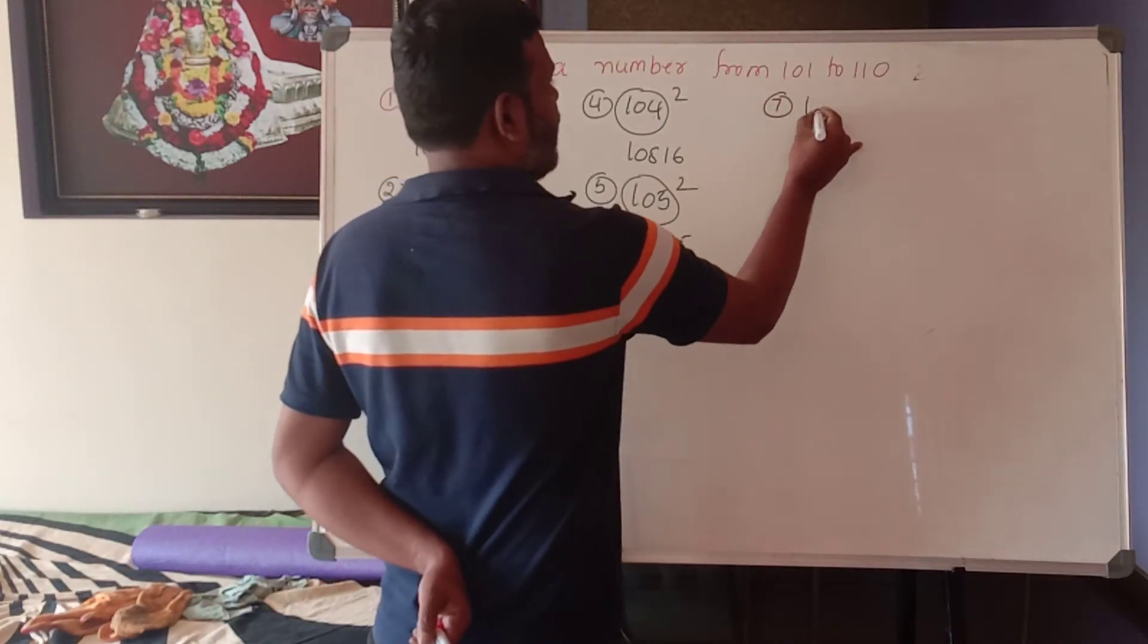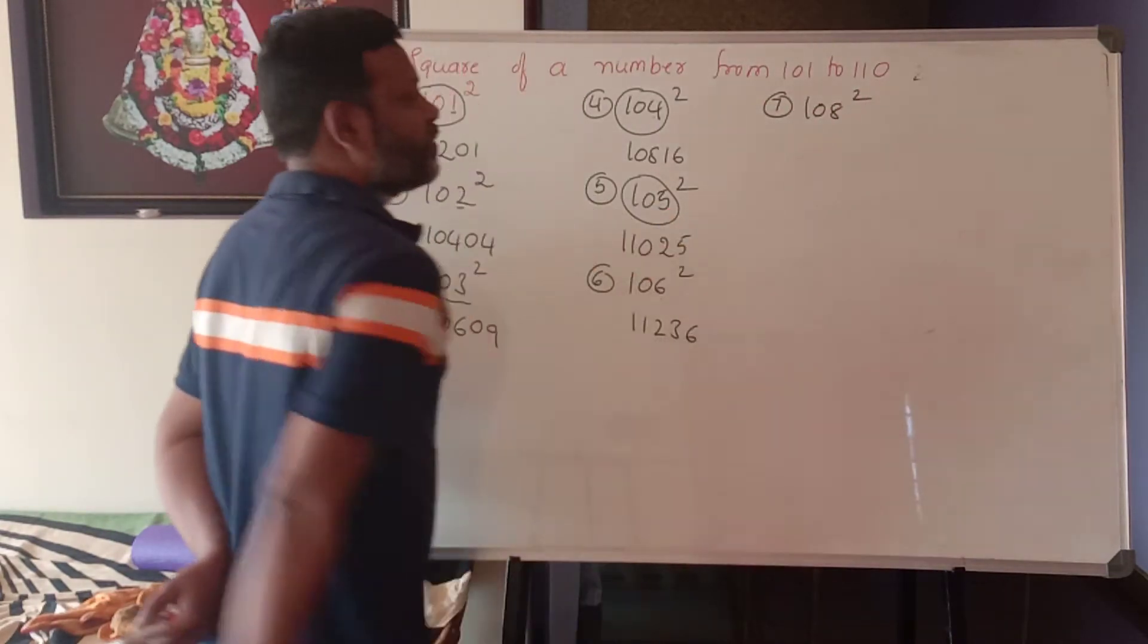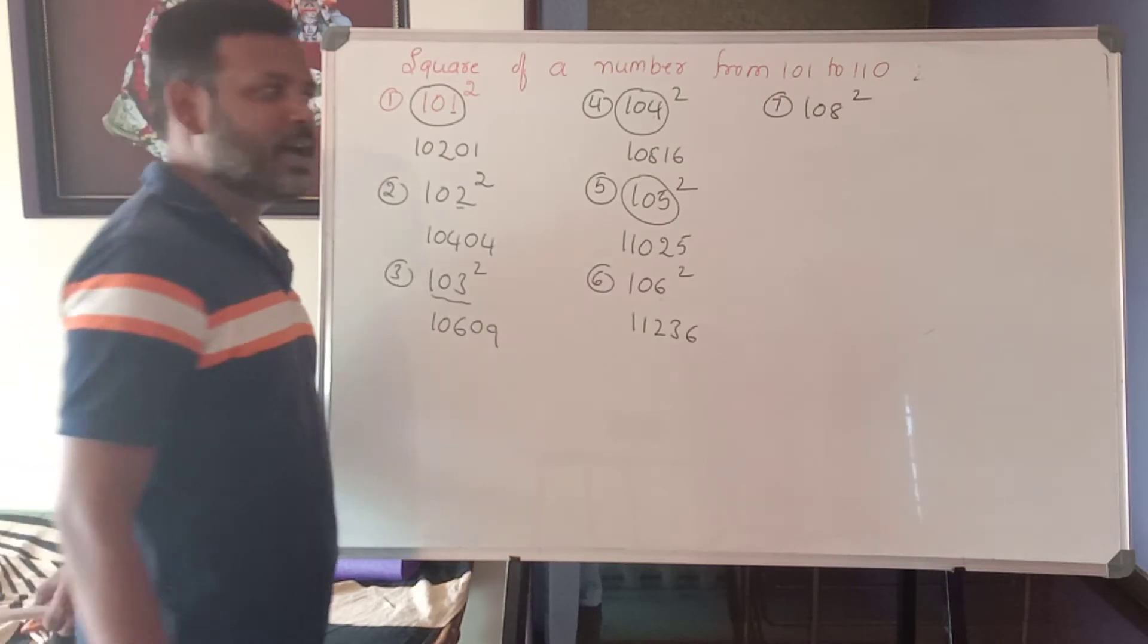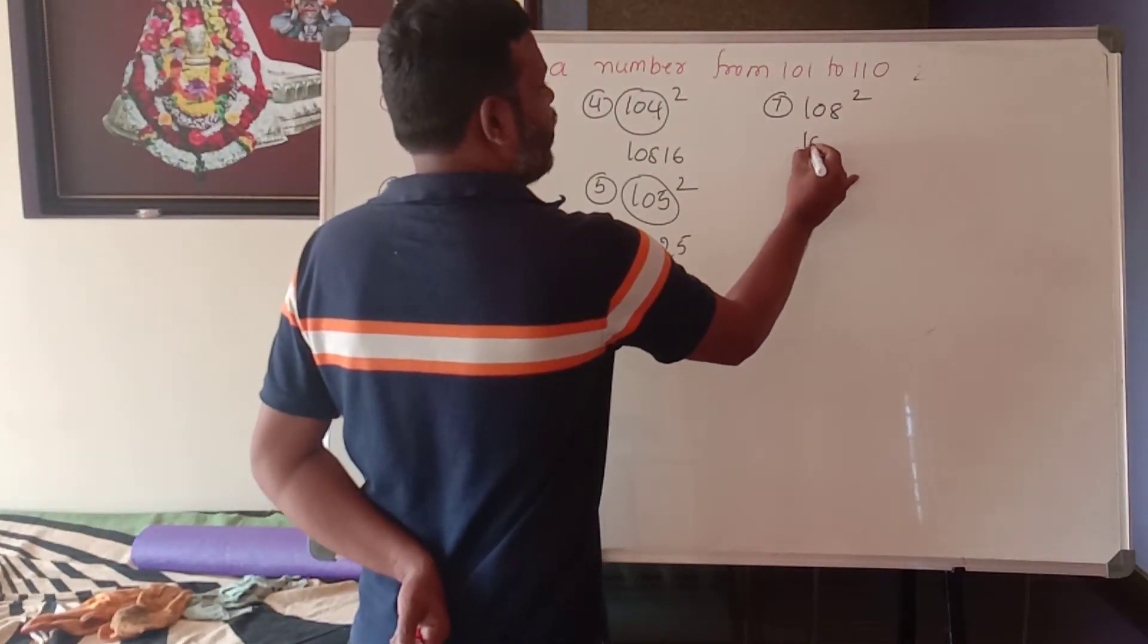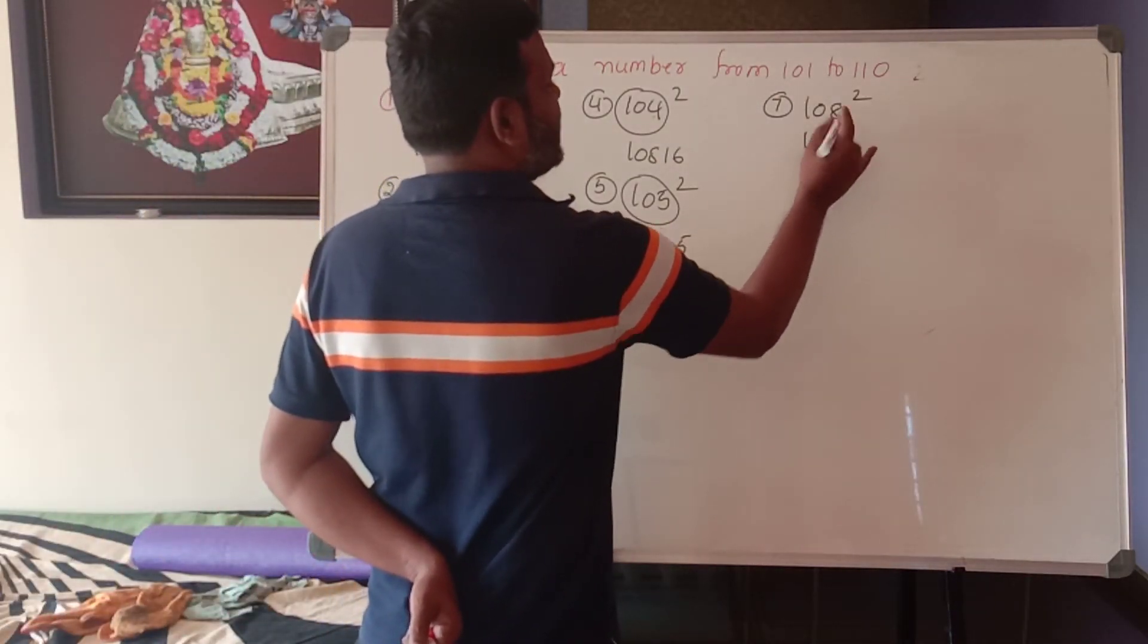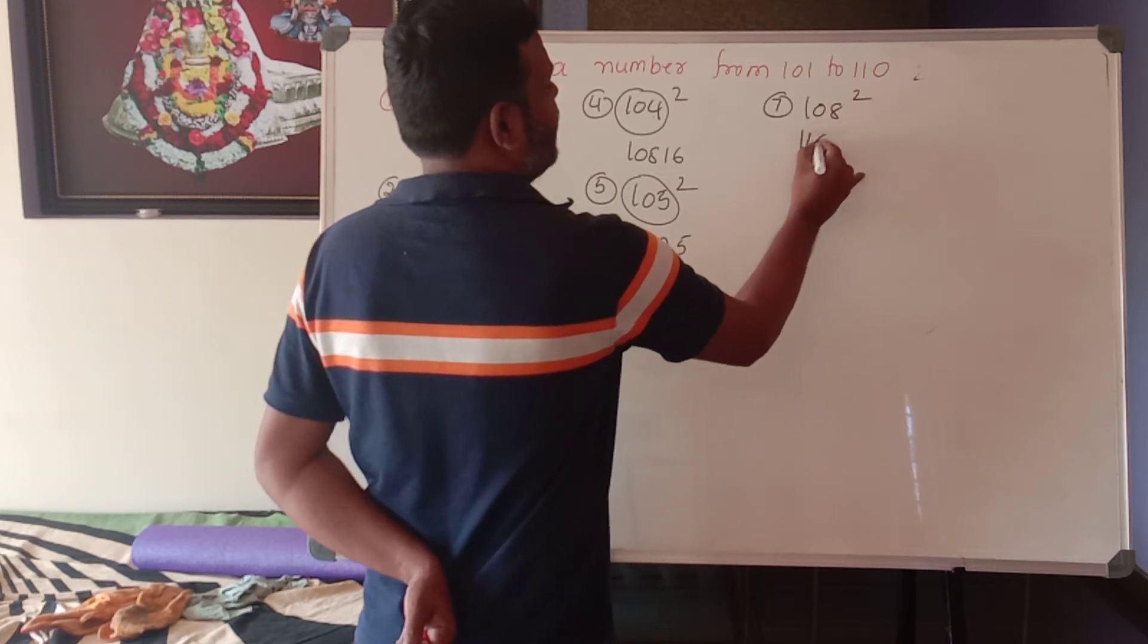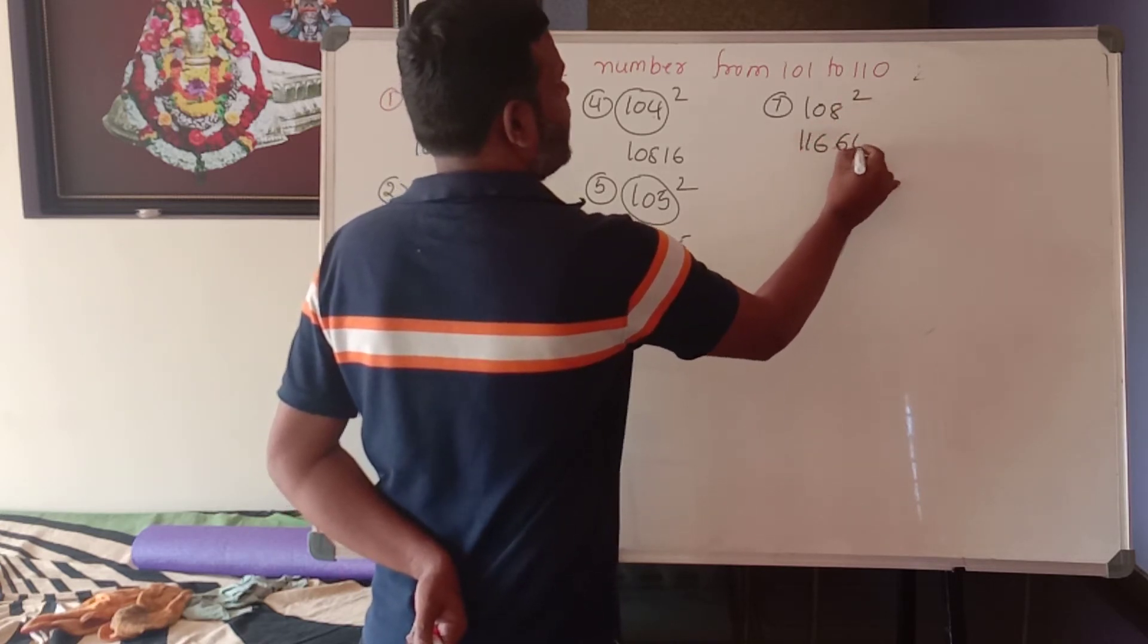Seventh one I can take for an example. 108 square. How to do here 108 square? That become what? 108 plus 8, what is that? What happens here? 116. And 8 square is what? 64.